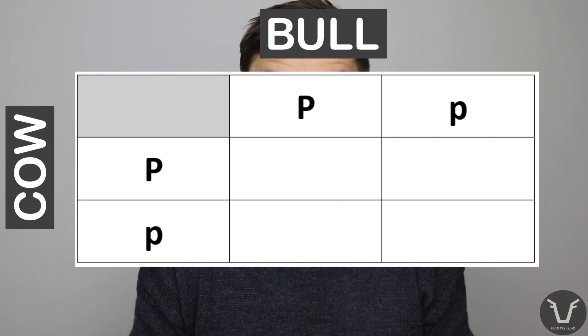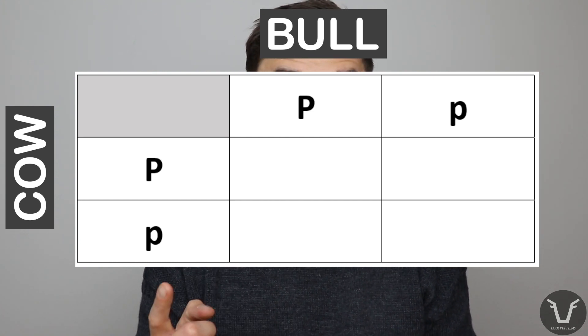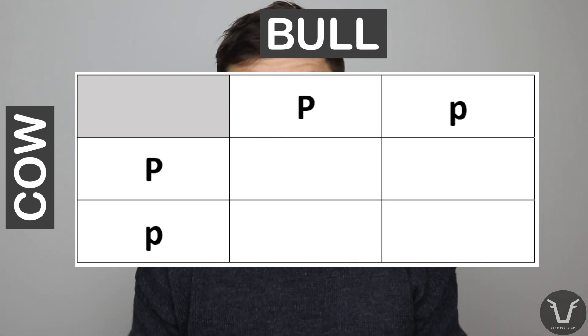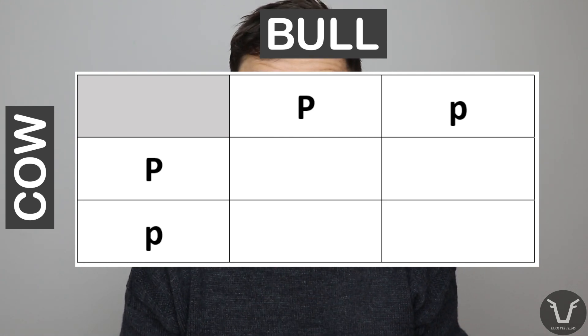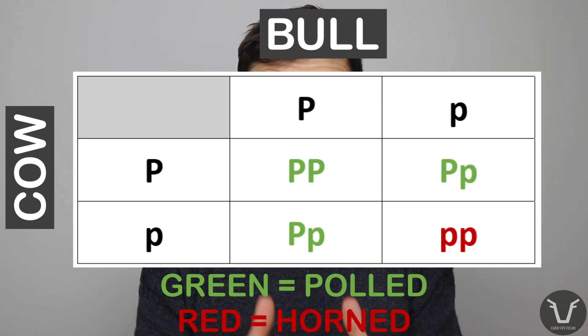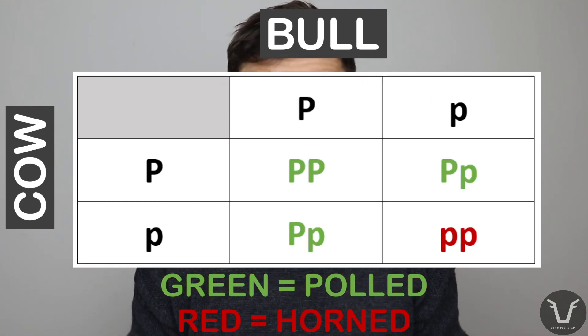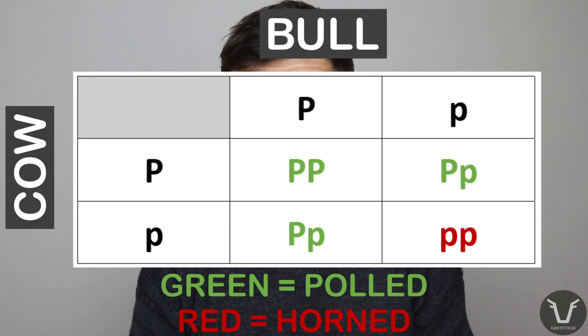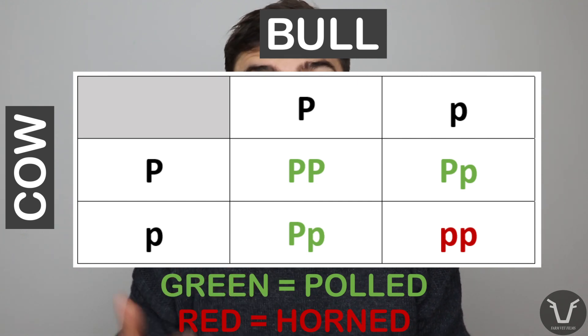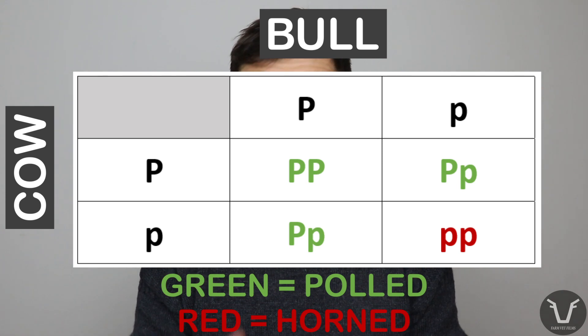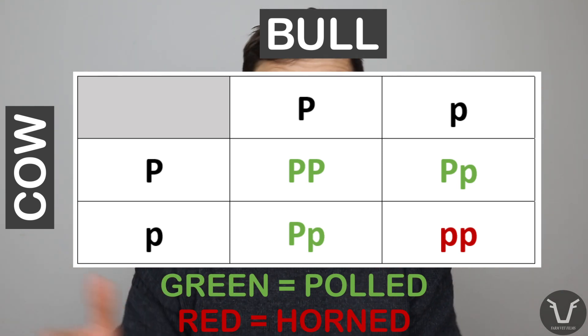For our third and final example, let's say we have a heterozygous polled bull and a heterozygous polled cow — both are carrying one copy of big P and one copy of little p. The phenotype of both animals is that they will be born polled, but as you can see when we cross them together they generate a real mix. One out of four calves will be homozygous polled, two out of four will be heterozygous polled, and one out of four is homozygous non-polled so it ends up being horned. In practice, three out of four calves are polled because you can't visually distinguish between heterozygous polled and homozygous polled. That's also why when you mate two polled animals together you can still get a horned calf.